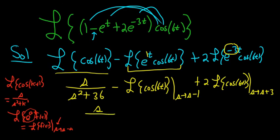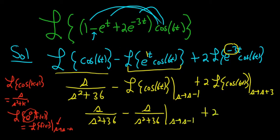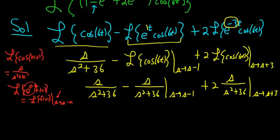So this is s over s squared plus 36, minus cosine has the s, so it's s, and then s squared plus 36. Then we still have the shift from s to s minus 1. Plus 2, and then again cosine has the s, so s squared plus 36, and the shift is from s to s plus 3. Last step is just make these substitutions and we are done.